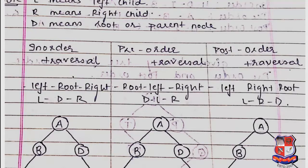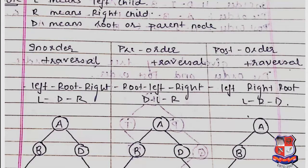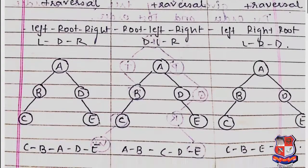For pre-order traversal, the rule is: root first, then left child, then right child — written as DLR. For post-order traversal, the rule is: left child first, then right child, then root — written as LRD.